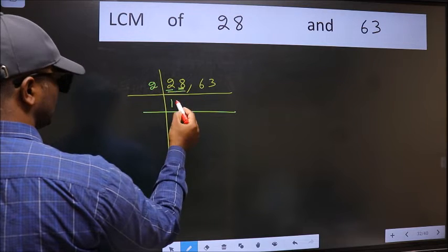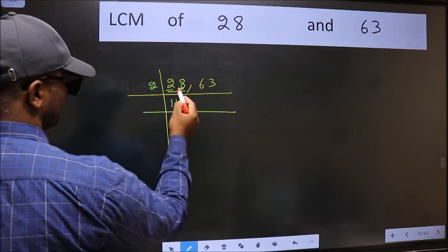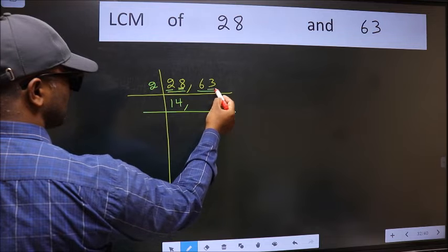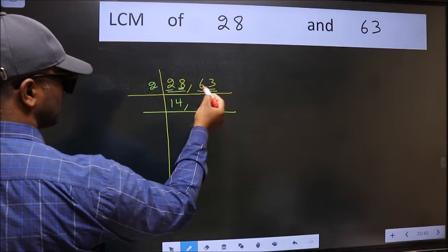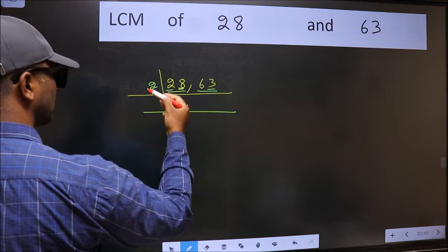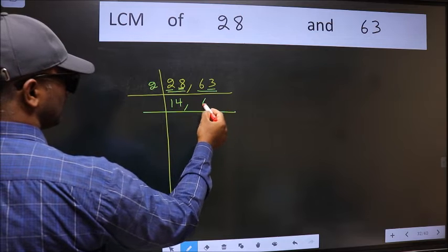The other number 8, when do we get 8 in the 2 table? 2 times 4 is 8. The other number 63, last digit 3, not even. So this number is not divisible by 2. So you write it down as it is.